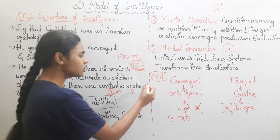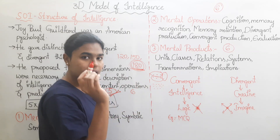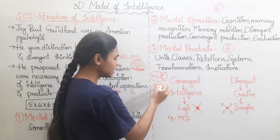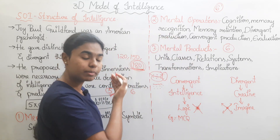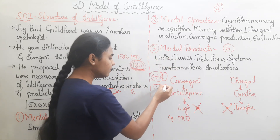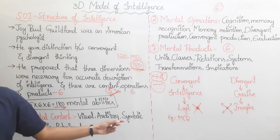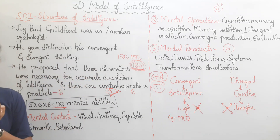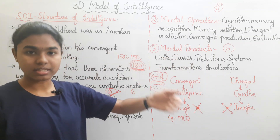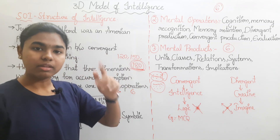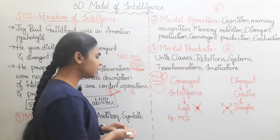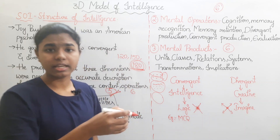Third is Relations — understanding the relationship between two units or items. Fourth is Systems — combining and organizing important information into complex patterns. Fifth is Transformations — the ability to make changes or conversions to existing knowledge. Sixth is Implications — the ability to predict or infer outcomes from known information.